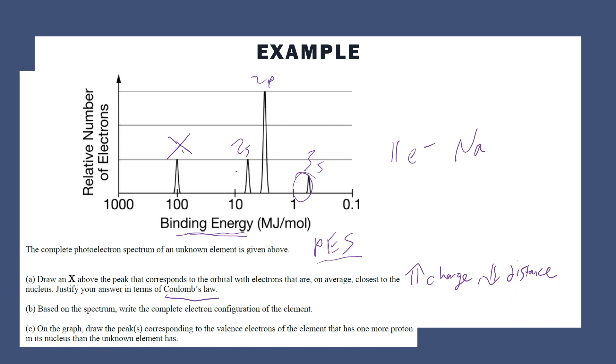For part B, based on the spectrum, write the complete electron configuration. We've already kind of done that, but let's write it out in proper notation: 1s² 2s² 2p⁶ and then 3s¹. And so that would show those 11 electrons. Part B was just one point.